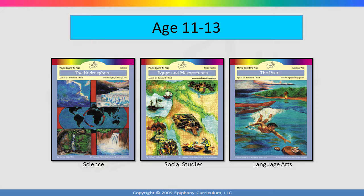Now that you have your year of curriculum organized, we are ready to look a bit deeper at the curriculum itself. In the first semester, there are three units labeled as unit one — one for science, one for social studies, and one for language arts. These three units comprise your first three and a half weeks or so of curriculum. Moving Beyond the Page is the only curriculum available anywhere that lines up science and social studies topics with language arts from the beginning of elementary through the end of middle school. This will help your child seek connections in the world around him instead of seeing subjects in isolation.